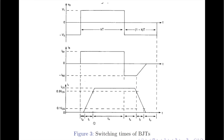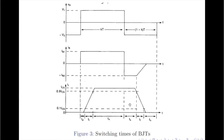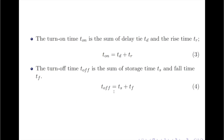To summarize, the turn-on time of the transistor is defined as the sum of the delay time td and the rise time tr, given as: t_on = td + tr. Similarly, the turn-off time of the transistor is defined as the sum of the storage time ts and the fall time tf, given as: t_off = ts + tf. That concludes a brief discussion on the switching characteristics of a BJT. Thank you.